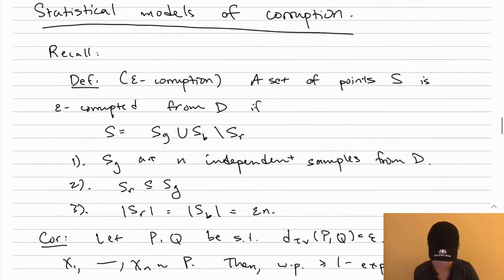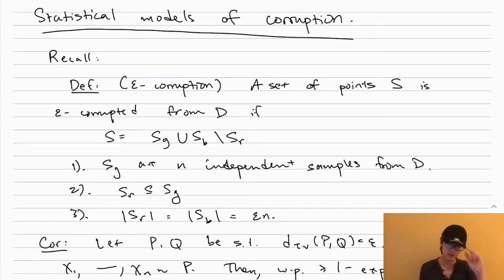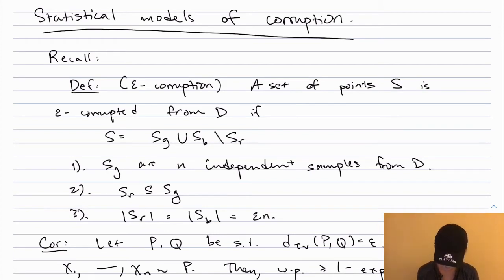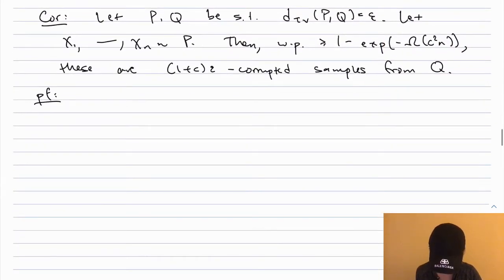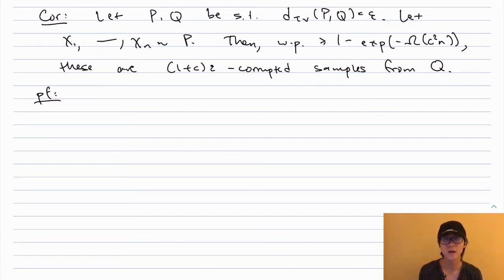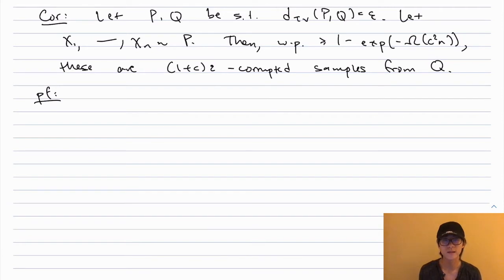Now back to robust statistics. Recall the definition of epsilon corruption: S = S_good ∪ S_bad \ S_removed, where S_good is N independent samples from D, S_removed is a set of epsilon·N removed points, and S_bad has size epsilon·N. The key corollary is: let P and Q have total variation distance epsilon. If X_1,...,X_N are N independent draws from P, then with high probability — some 1 - exp(-Ω(C²N)) — these are actually a (1+C·epsilon)-corrupted set of samples from Q.